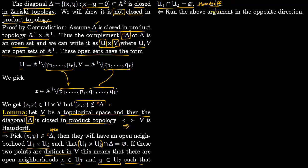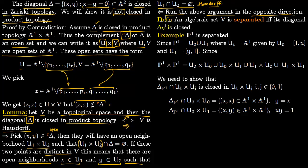From the product topology, if two points are distinct you can find sets U1 and U2 which are neighborhoods of x and y satisfying the Hausdorff condition. You can also run the argument in the opposite direction: start from the Hausdorff condition and construct the diagonal argument to get (x, y) lying in an open set, completing the proof in the other direction. In Zariski topology it is not Hausdorff, so the lemma does not apply, but separatedness — which is related to this diagonal — is an analog of Hausdorffness.